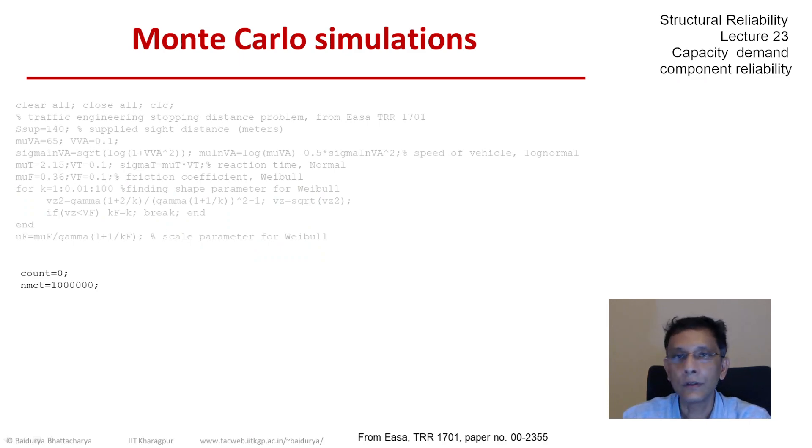So now we are ready to start the loop. So the count is the counter for number of failures. We have one million Monte Carlo trials. That's what we have set. So we start the loop. It's a for loop in MATLAB. We run it from i equals one through NMCT.